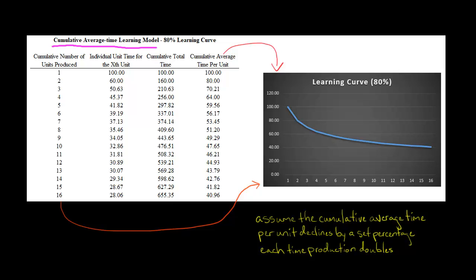Let me walk you through the numbers here. We've got the individual unit time for the Xth unit. To make the very first unit, it takes 100 hours. The cumulative total time, since we've only made one unit, is also 100 hours. And the cumulative average time per unit is likewise 100 hours — all three columns are 100 hours.